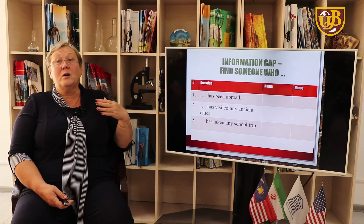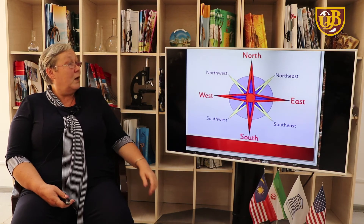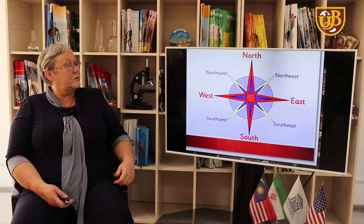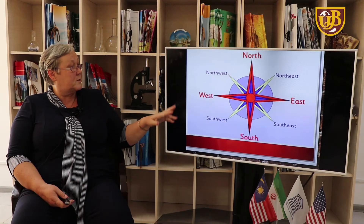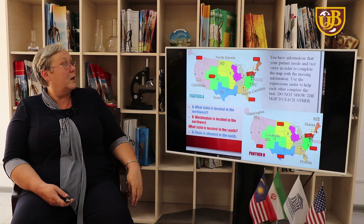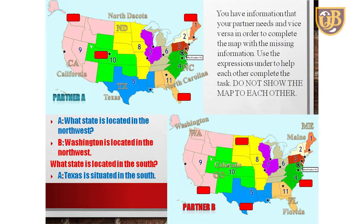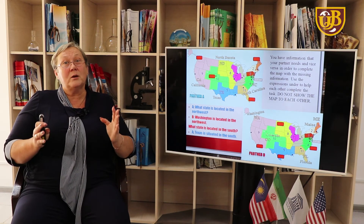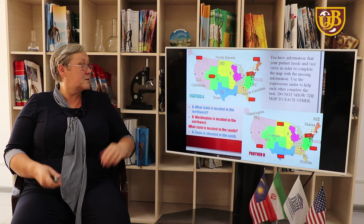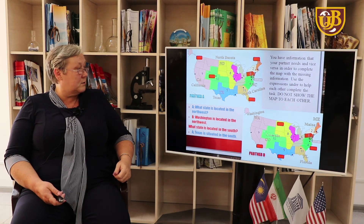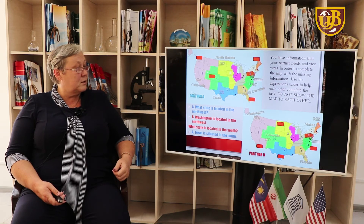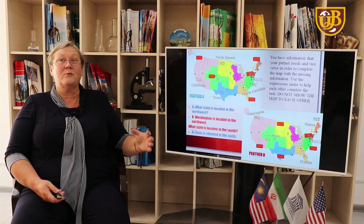With the help of this activity, you can practice whatever you like — vocabulary, grammar, or something else. Another very interesting activity uses directions: north, east, west, south, and middle, northeast, southwest, northwest. The task: you have information that your partner needs, and vice versa, in order to complete the map with the missing information. Use the given expressions to help each other complete the task — do not show the map to each other. For example: 'What state is located in the northwest?' — 'Washington is located in the northwest.' 'What state is located in the south?' — 'Texas is situated in the south.' By the end of the activity, both students will have completed information.